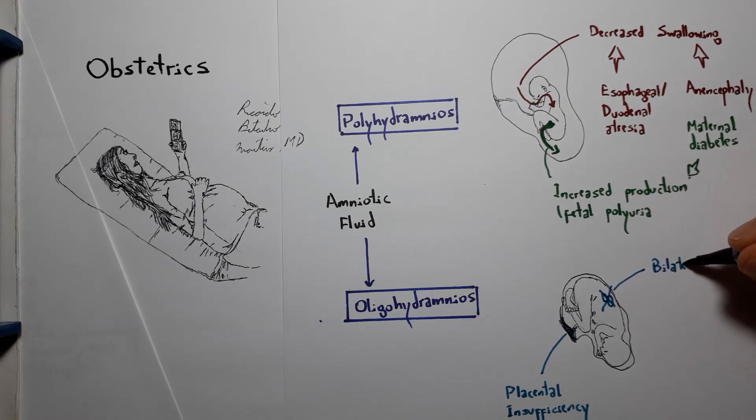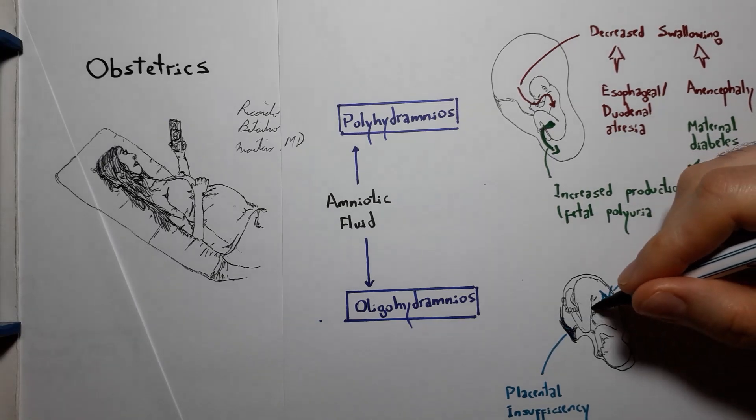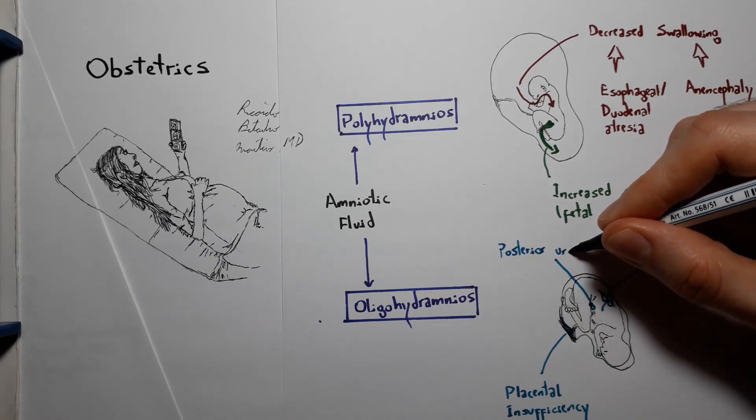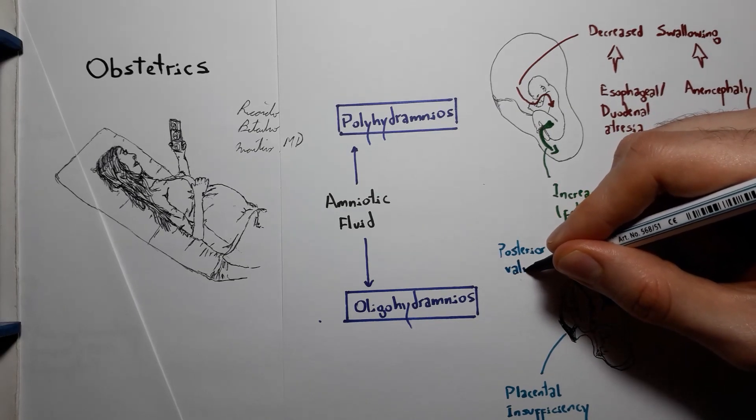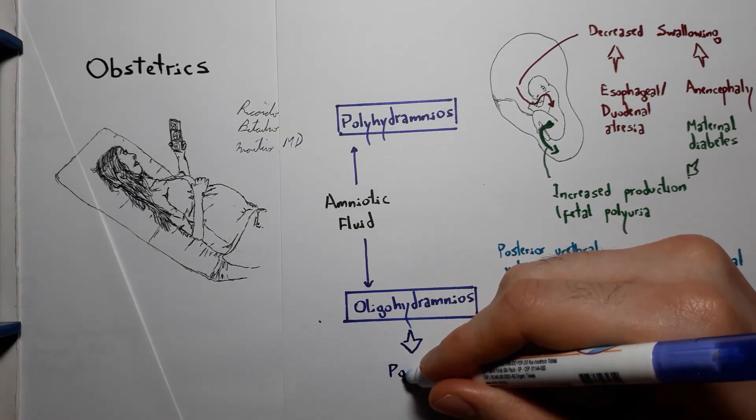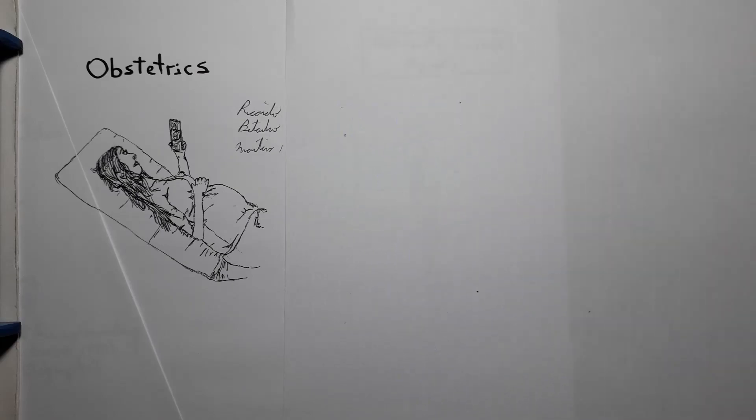If the fetus has no kidneys, it has no way to produce amniotic fluid, or by an obstruction of the outflow of the fetal urinary tract, such as the presence of posterior urethral valve. If the urinary tract outflow is obstructed, even if the fetus can produce urine, he won't be able to excrete it into the amniotic sac. I said he because posterior urethral valve is almost exclusively seen in males. Severe oligohydramnios cases can also lead to Potter sequence.